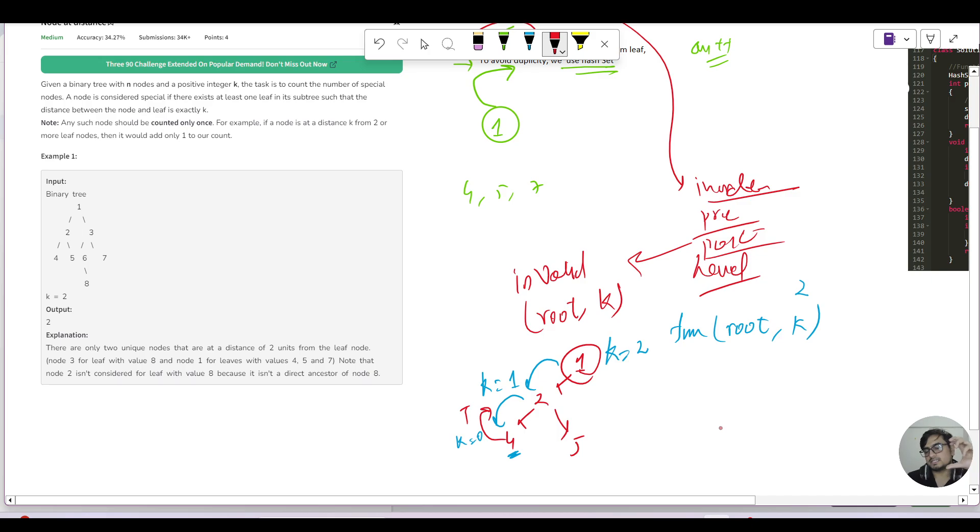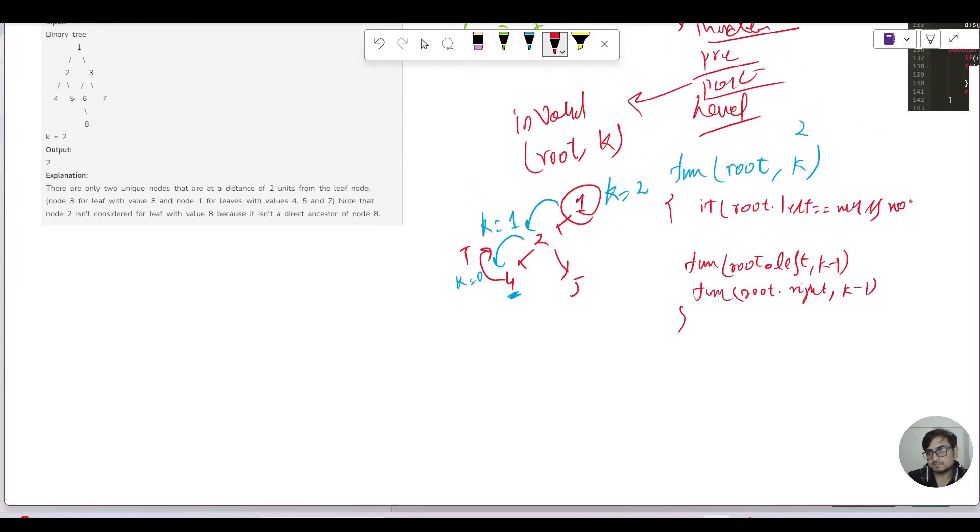So let's write a little code depending upon the drawing which we had just made. I will call in this body the function root.left, k minus 1. Similarly, I'll call function root.right, k minus 1. Now, what is the base case? If root.left equals null and root.right is also equals to null, then and then in that case I will just say return k equals equals to 0 or not. If it is, you return true. If it is not, you return false.